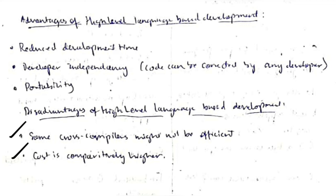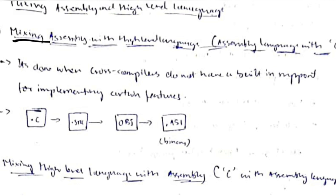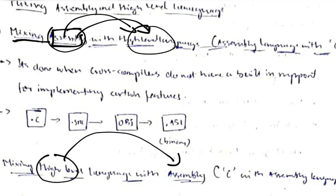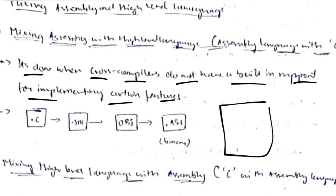Disadvantages of high-level language include higher cost and potentially inefficient compilers. The third type is a combination of both languages. In the first category, the main code is in high-level language (C or C++) with assembly mixed in when the cross compiler lacks built-in support for certain features. The source .c file is converted to a .src source file, then to an object, and finally to a binary file.